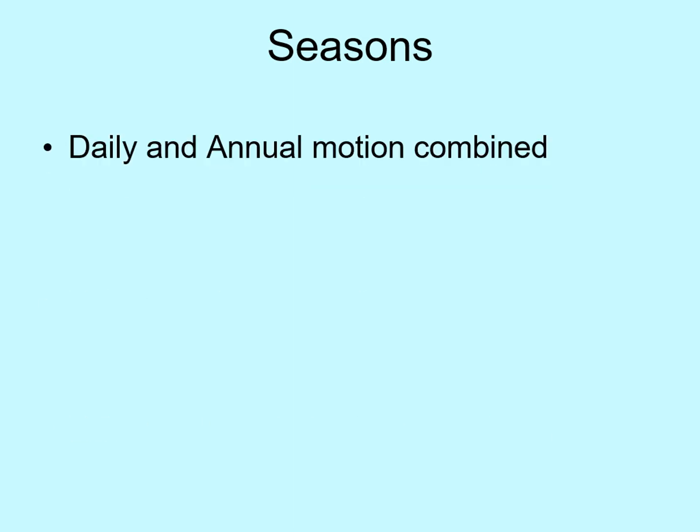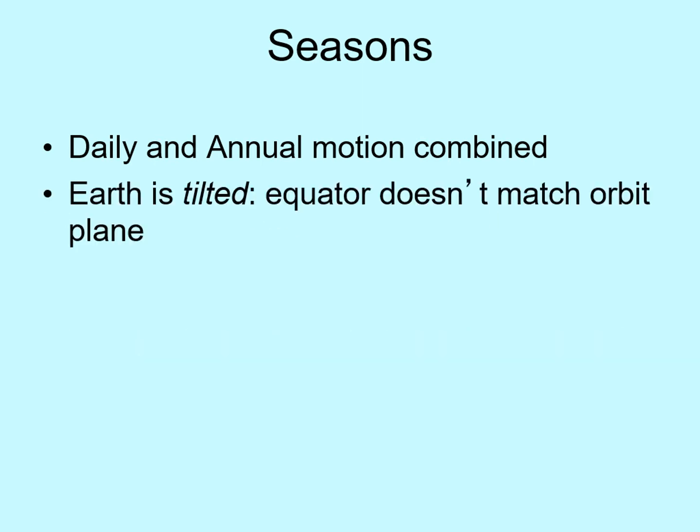Let's wrap up our look at the motion of the Earth by talking about seasons. Seasons are caused by a combination of daily and annual motions. You've probably already heard that the Earth is tilted — in fact, most globes are tilted to reflect this. But you might be wondering what that really means. After all, there is no table out in space for the Earth to be tilted on. So what is it tilted with respect to? The tilt is between the Earth's equator and the plane of its orbit around the Sun. In effect, the Earth's spin doesn't line up with its orbit.